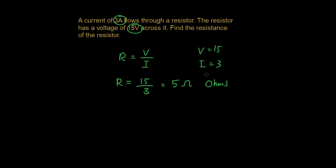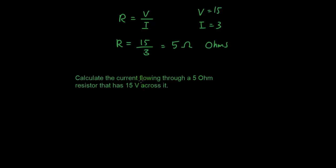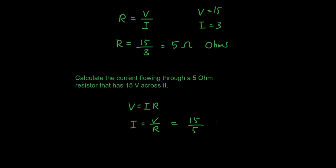Let's do another quick question: calculate the current flowing through a 5 ohm resistor that has 15 volts across it. Again, V equals IR, and if I rearrange this equation I will get I is equal to V over R. So that's 15 over 5 — because the resistance is 5 — and the answer is 3 amps. I hope you guys understand this tutorial. Thanks for watching. See you next time.